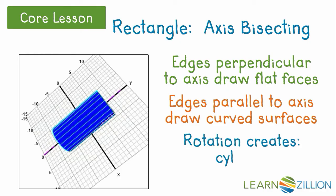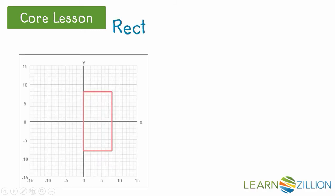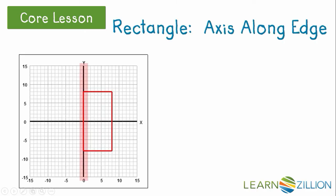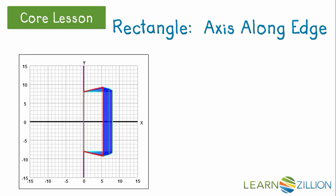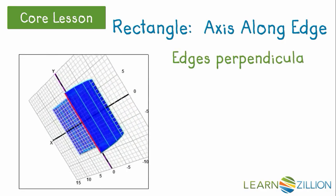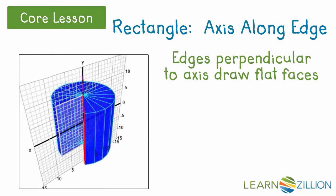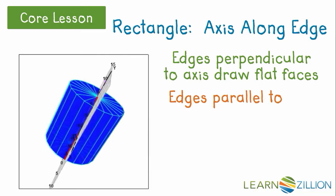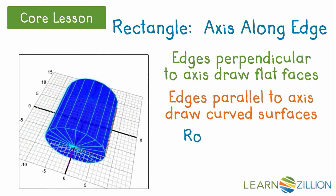So, what do you think will happen if we orient the axis a different direction? Here's that same rectangle with a different axis of rotation. When we rotate around this axis, notice what happens. Again, the edges that are parallel to the axis create a curved surface, and the edges perpendicular to the axis create flat surfaces. A cylinder is the result again.